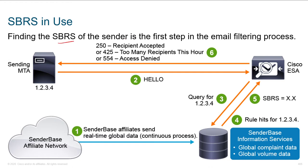Finding the SBRS of a sender is the first step. Email comes in - what do we do? Well, if the recipient's accepted, we'll keep processing it. Now there's a good chance that a message comes in and we go, wait a minute, there are too many recipients this hour. Your reputation may be so bad that we want to limit how much traffic we get from you.